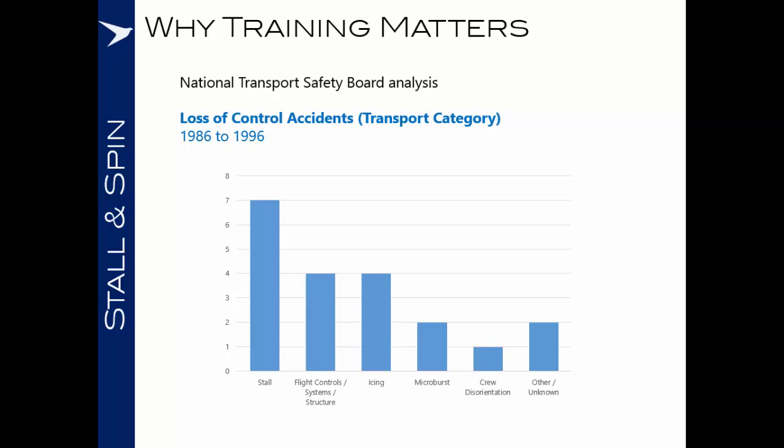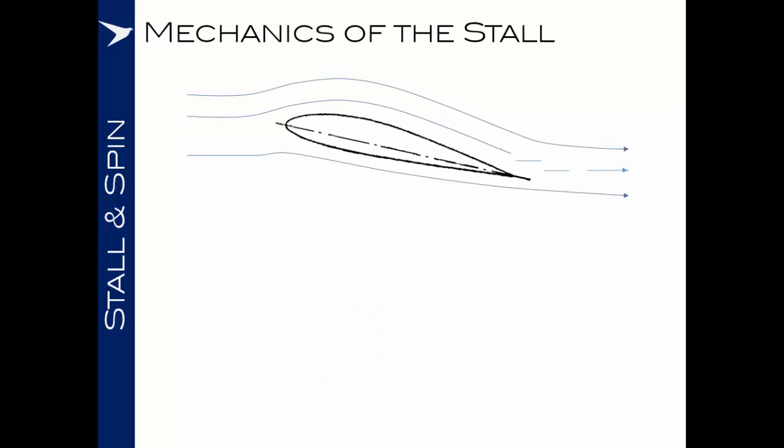Why do we train for this? The National Transport Safety Board of the United States analyzed loss of control accidents in the transport category from 1986 to 1995 to understand what was the root cause of the upset. As you can see from the graph, stalling came out as the number one cause. Indeed, there have been several very high-profile accidents in recent years — Air France 447 and Colgan Air 3407 are two tragic and prime examples.